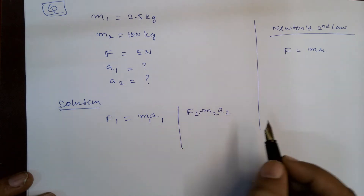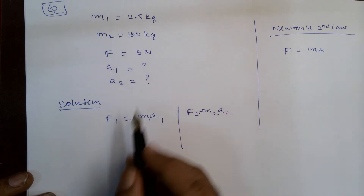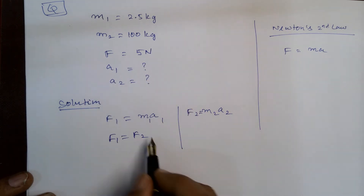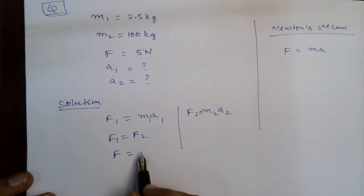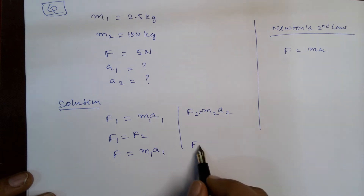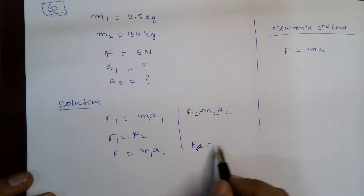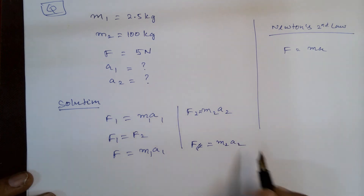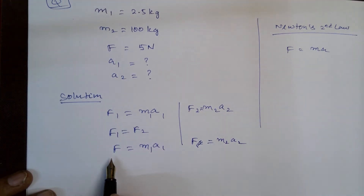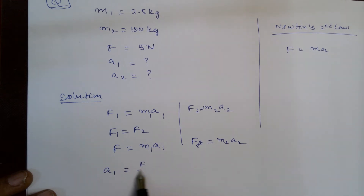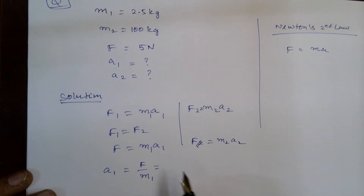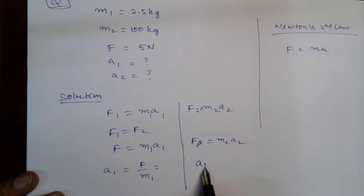These are the two forces. Of course, the force remains constant, so F1 is equal to F2. That means F2 is equal to M2 times A2. So in this case, A1 is equal to F divided by M1, and A2 is equal to F divided by M2.